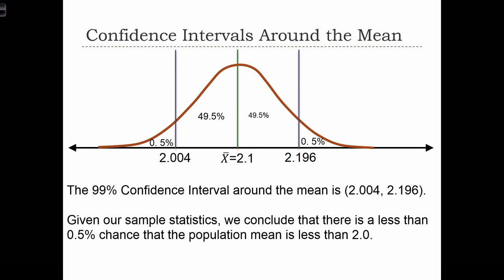So the confidence interval goes from x-bar minus 0.096 to x-bar plus 0.096. So we can be 99% sure that the population mean is within this range of values. And there's only a 0.05% chance of obtaining a mean value over here. So given our sample statistics,